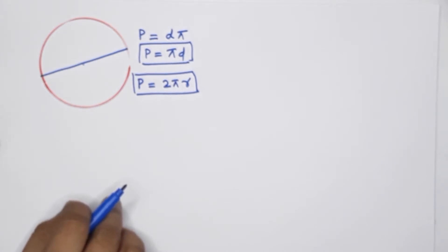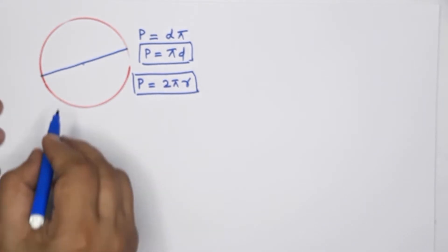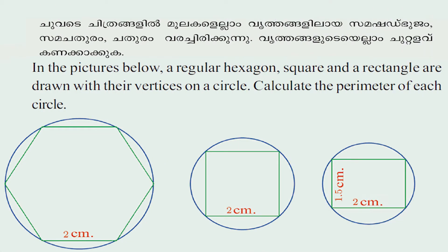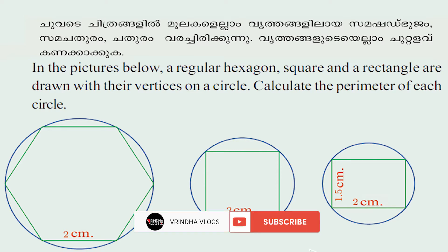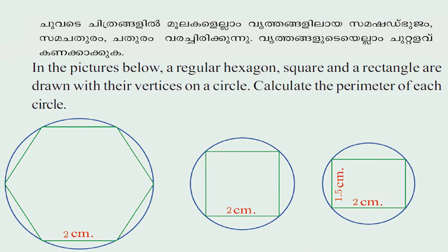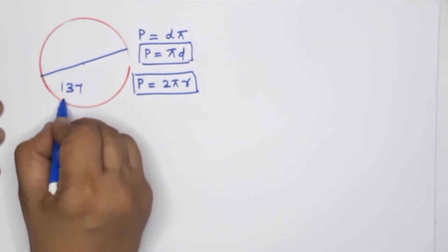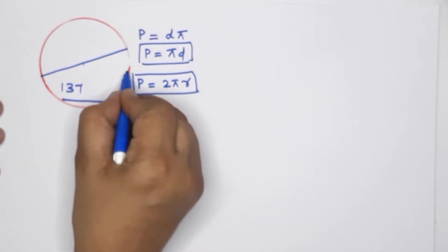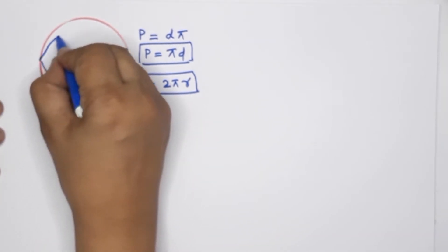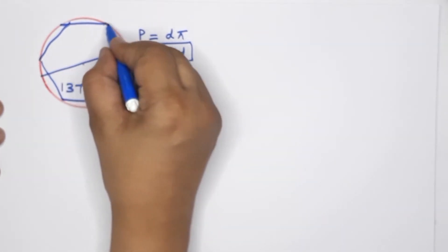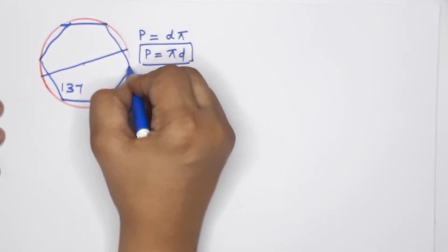The next exercise is on page 137. First question: in the picture below, a regular hexagon, square and a rectangle are drawn with their vertices on a circle. Calculate the perimeter of each circle. So this is a circle — this circle contains a regular hexagon: 1, 2, 3, 4, 5, 6. Regular hexagon.